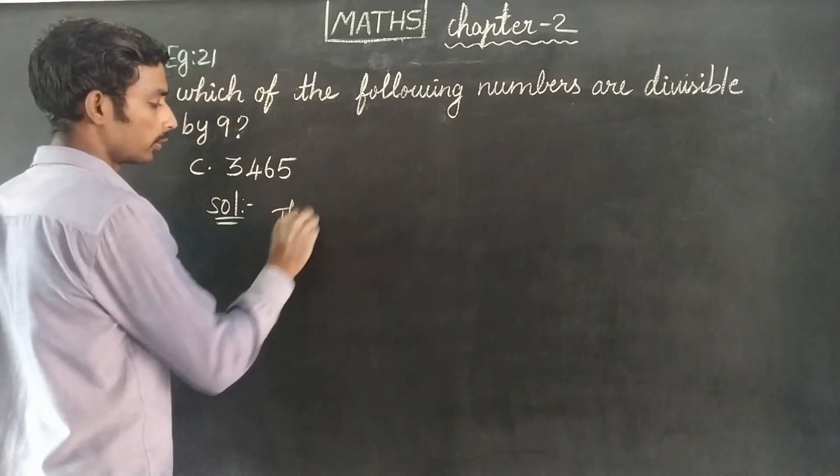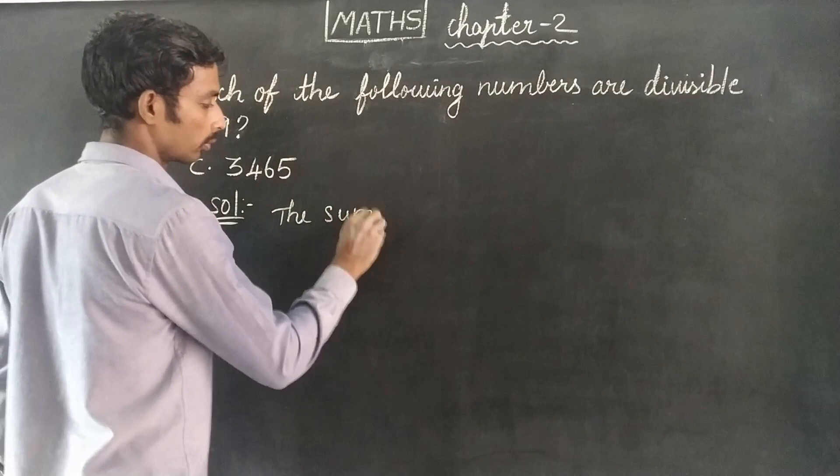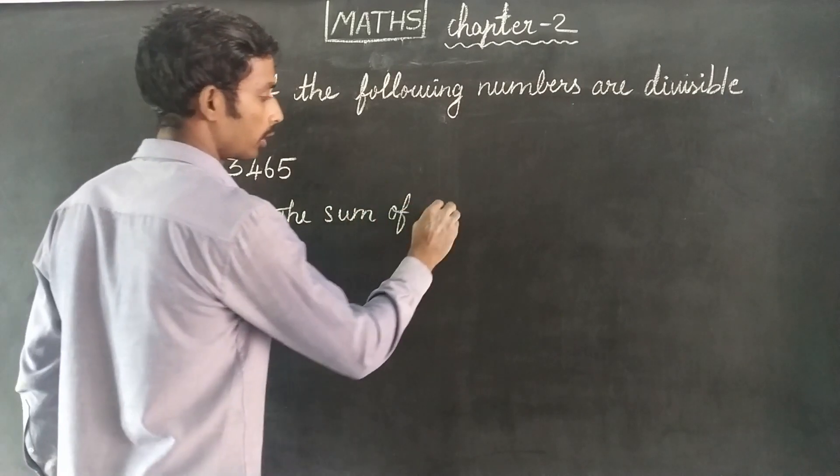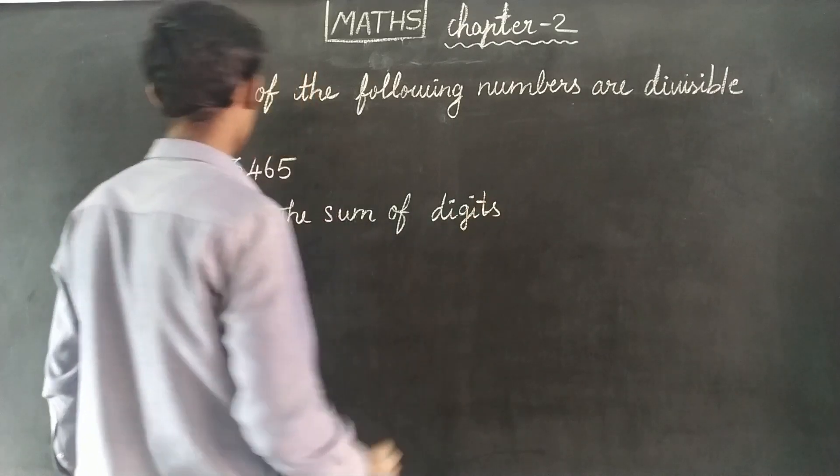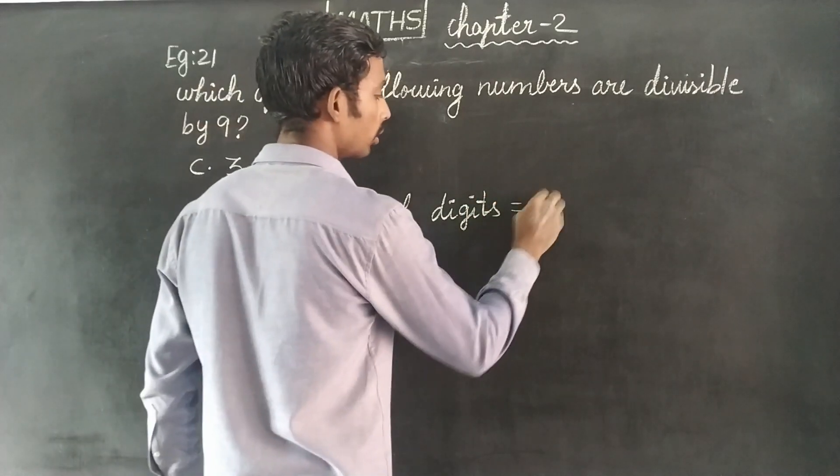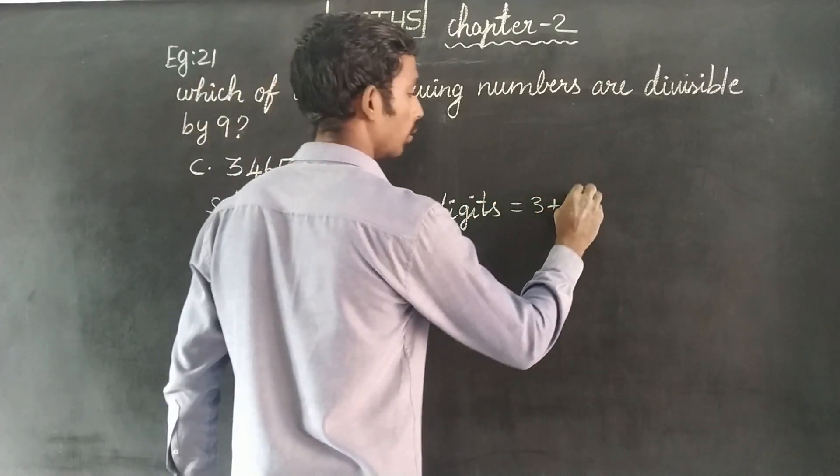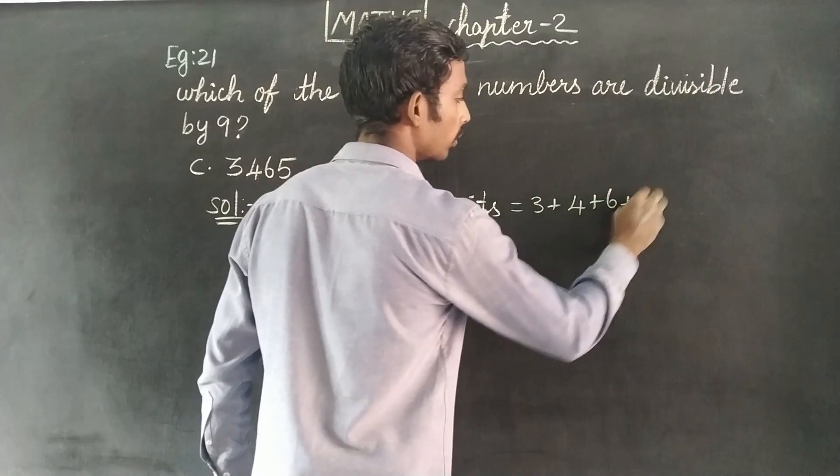The sum of the digits equals 3 plus 4 plus 6 plus 5.